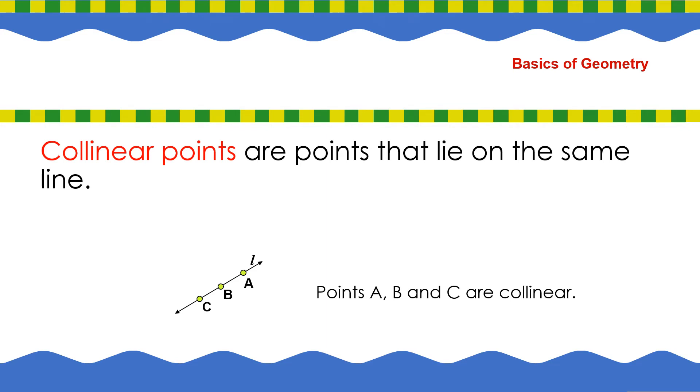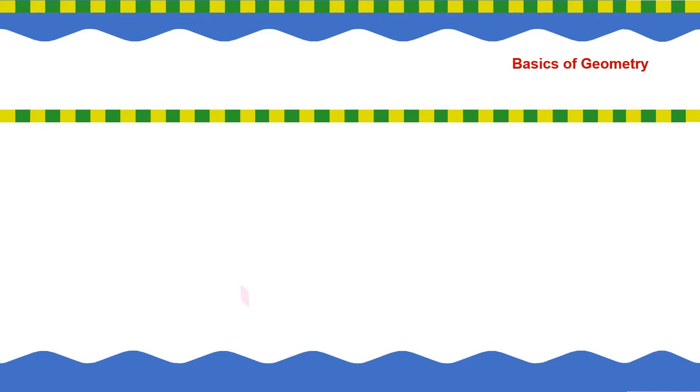Okay. We have here points A and B and C are collinear. Now, what is collinear? Collinear points are points that lie on the same line. Yes. This one also has a defined concept.